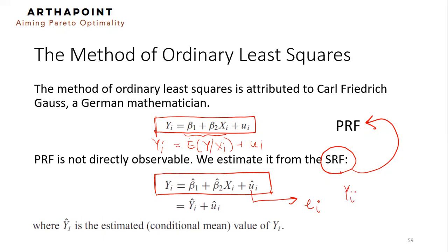So you will see YI is equal to beta 1 hat plus beta 2 hat XI plus EI. Or, this is nothing but YI hat plus EI, where YI hat is the estimated conditional mean. Estimation for what? Estimation for this population conditional mean. So this becomes my sample regression function or the sample counterpart.